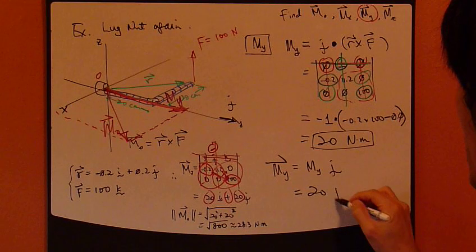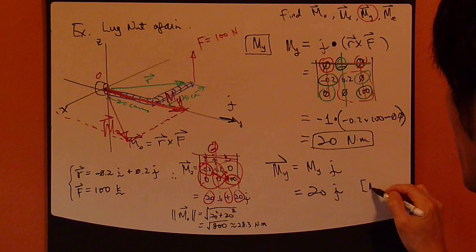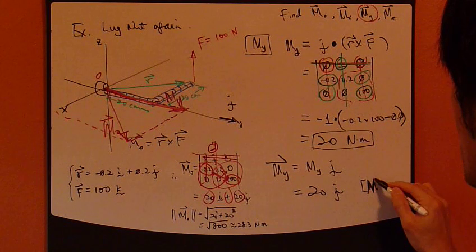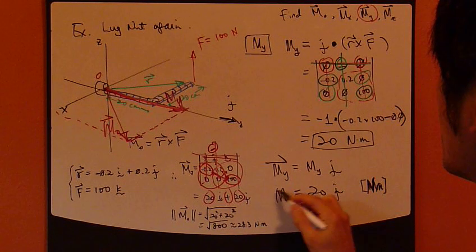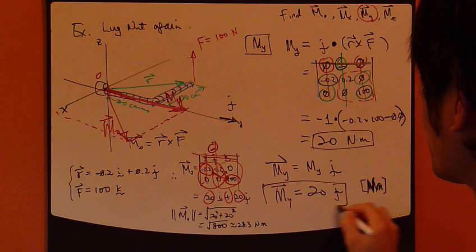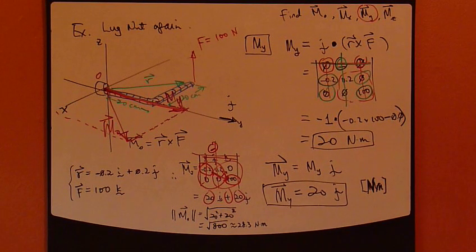That's it. So, the j vector. Okay? So, it's 20 j. Okay? So, newton meter. That's the unit. Okay? So, that's it. So, that's your m_y vector.